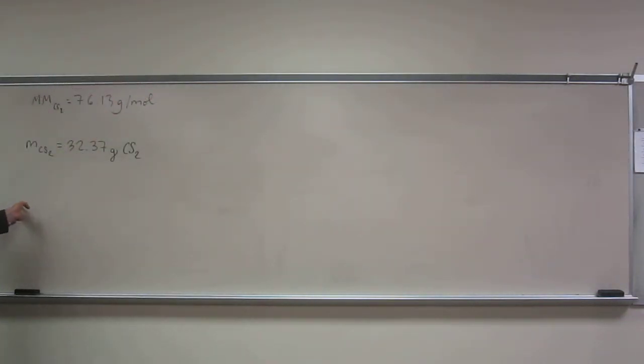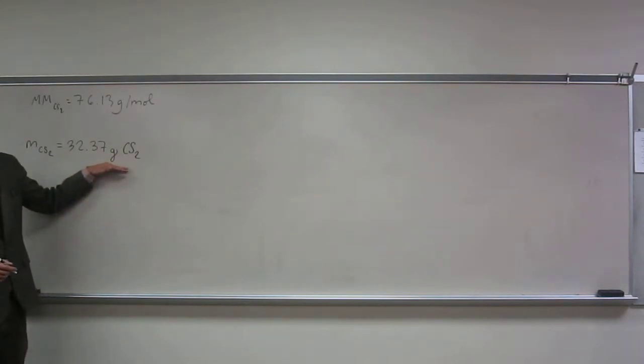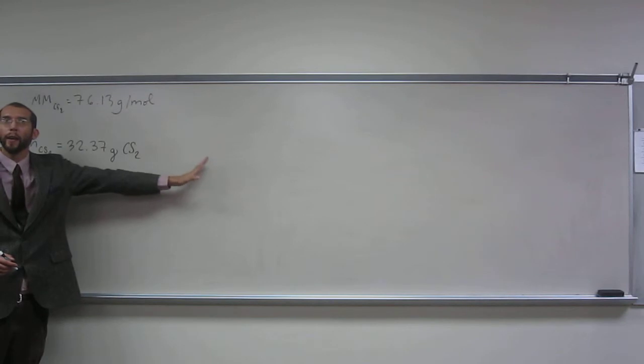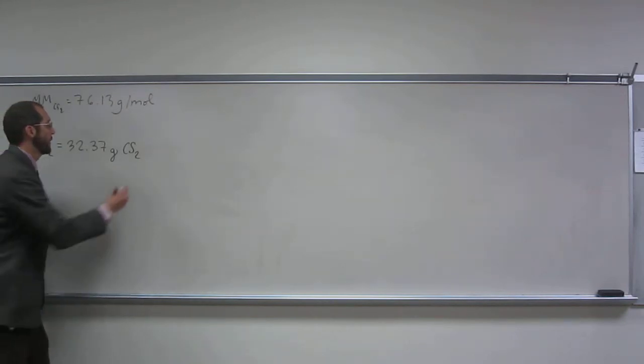So we've got the molar mass up there, right? But we've got grams on top, so how do I do conversions? I'm going to have to multiply it by a ratio. So when I do that, what's going to be on the top?